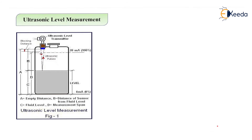Next is ultrasonic level measurement. In the diagram, the ultrasonic level transmitter is connected above the tank. There are four distances to be measured: distance A is from the bottom to the upper level — called the empty distance; distance B is the distance from the sensor to the fluid level; distance C is the fluid level; distance D is the measurement span; and the distance between A and B is called the blocking distance.